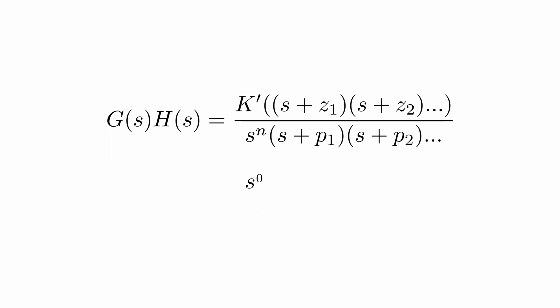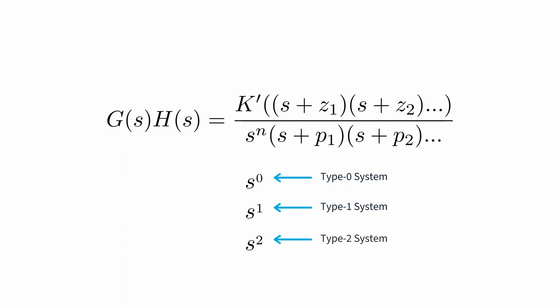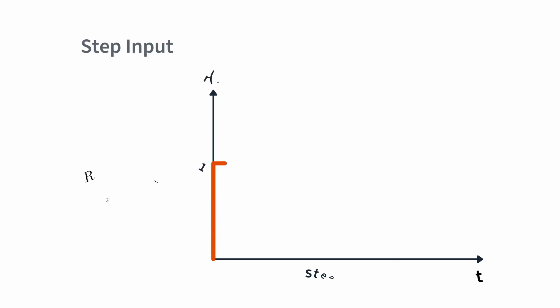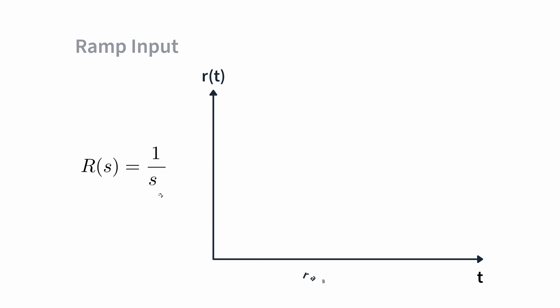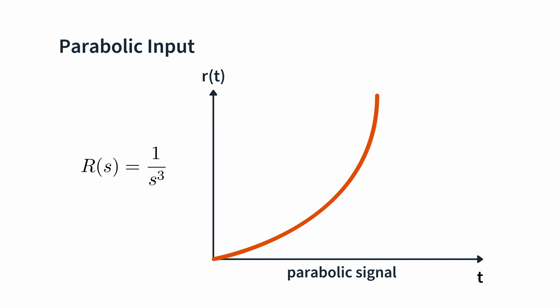If it is s to the power zero, meaning the s becomes a one, then there aren't any poles and it is a type zero system. s gives us one pole, so it becomes a type one system, while s squared gives us two poles and is type two. Also, while in the last tutorial we only assumed a step function input, when we're doing an error analysis, we have to know what the input function is before we can calculate the error. We'll consider the step function, which in the Laplace domain is represented by 1 over s; the unit ramp function, represented by 1 over s squared; and the unit parabolic input, represented by 1 over s cubed.